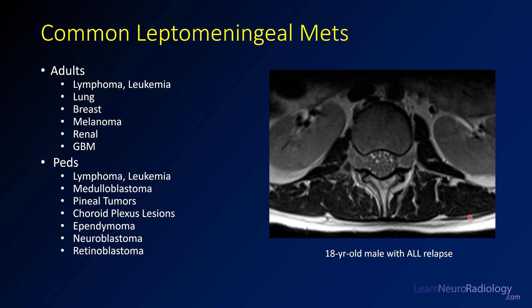When thinking about leptomeningeal metastatic disease, certain diseases are more commonly the cause. In adults, that tends to be lymphoma and common cancers like lung, breast, and melanoma. In pediatric patients, you have to think more about intracranial lesions likely to have leptomeningeal spread — things like medulloblastoma, pineal lesions, and choroid plexus tumors. Here you see a patient with relapsed ALL: the nerve roots are very thickened and expanded, with expansion in the neural foramina and almost no visible CSF — leptomeningeal spread of ALL throughout the cauda equina.